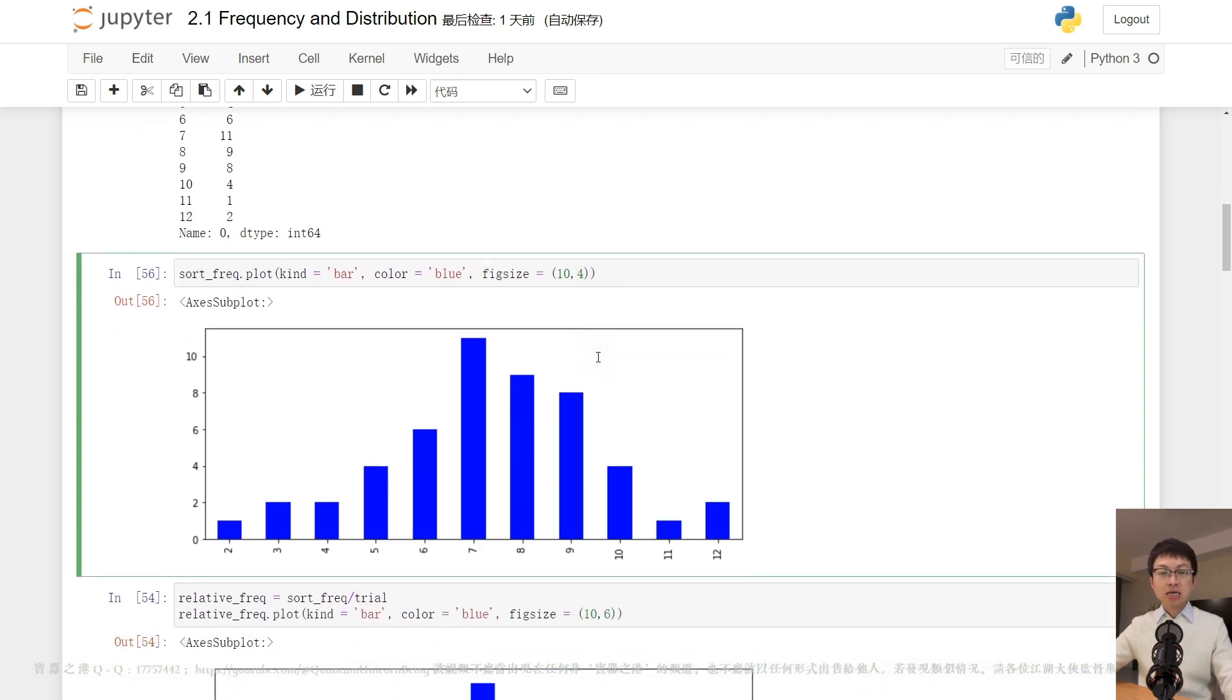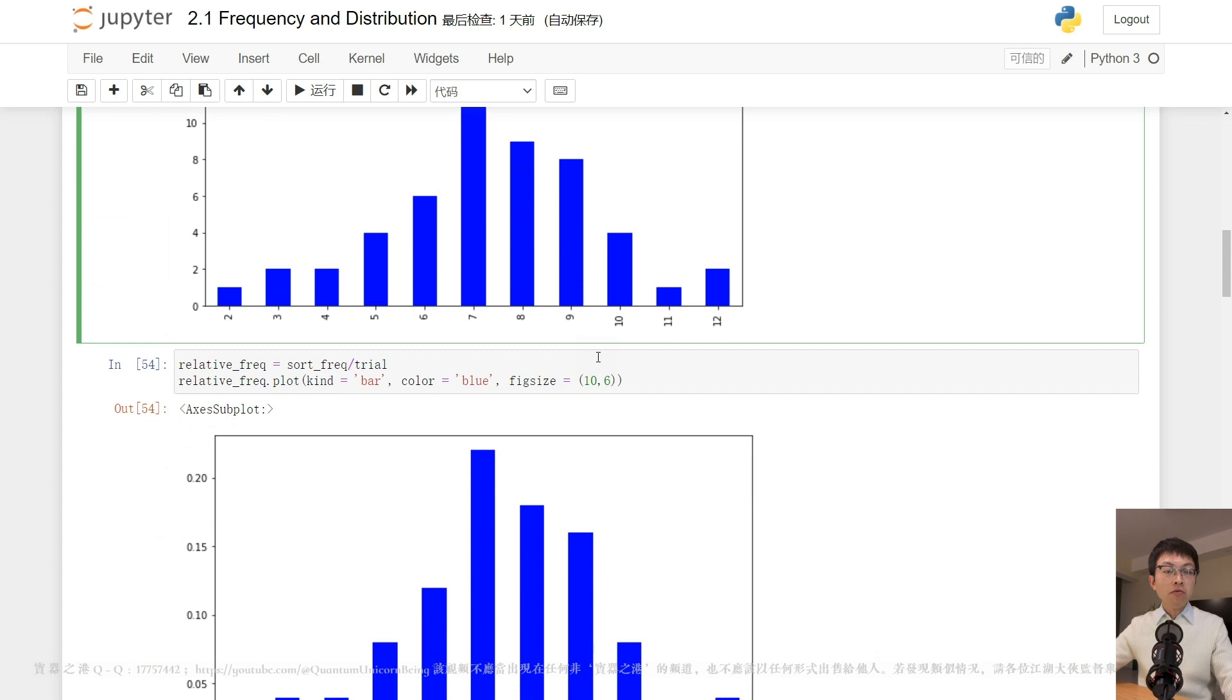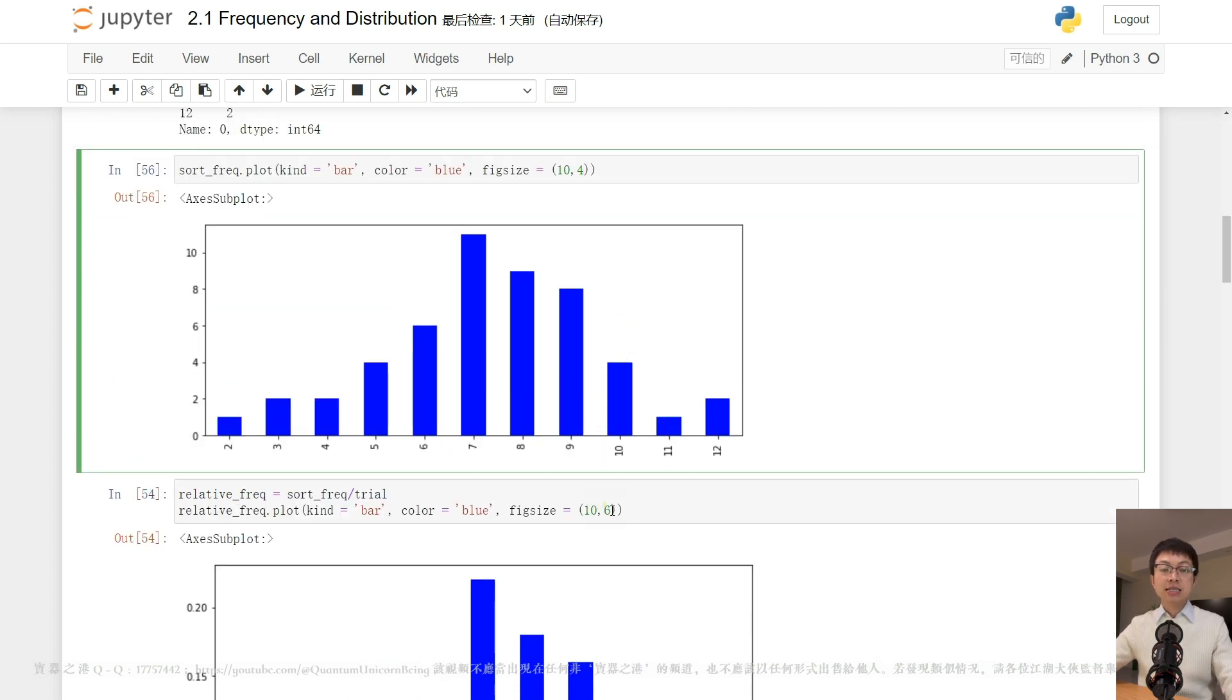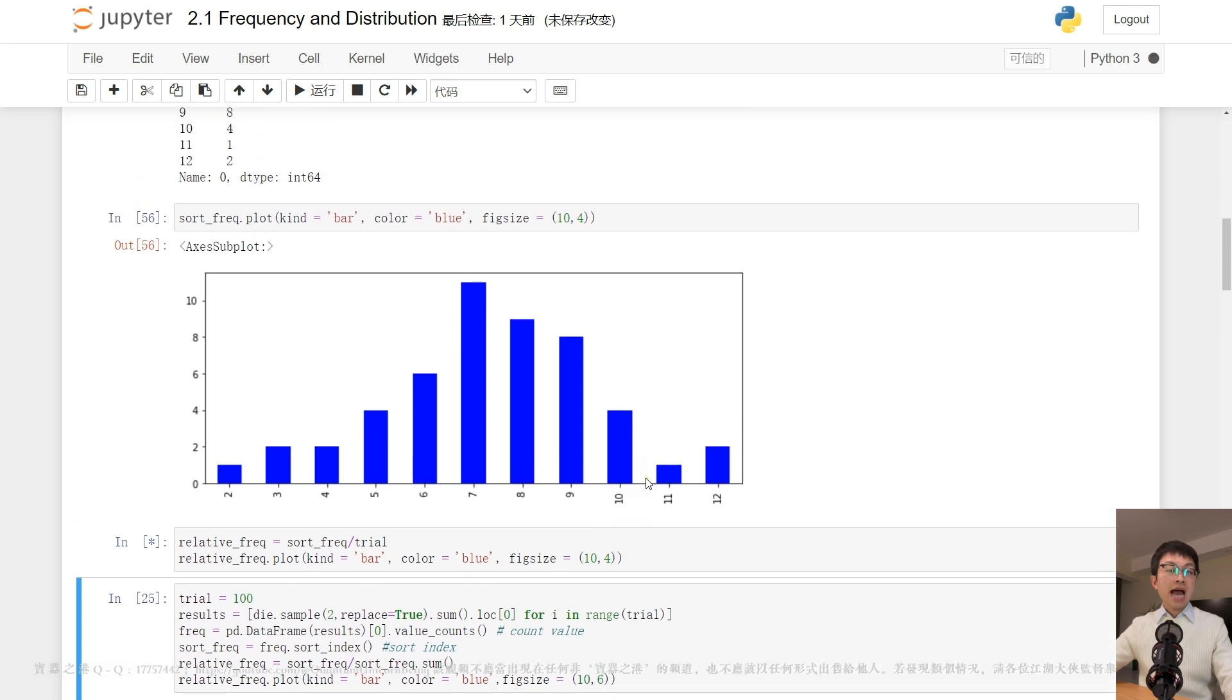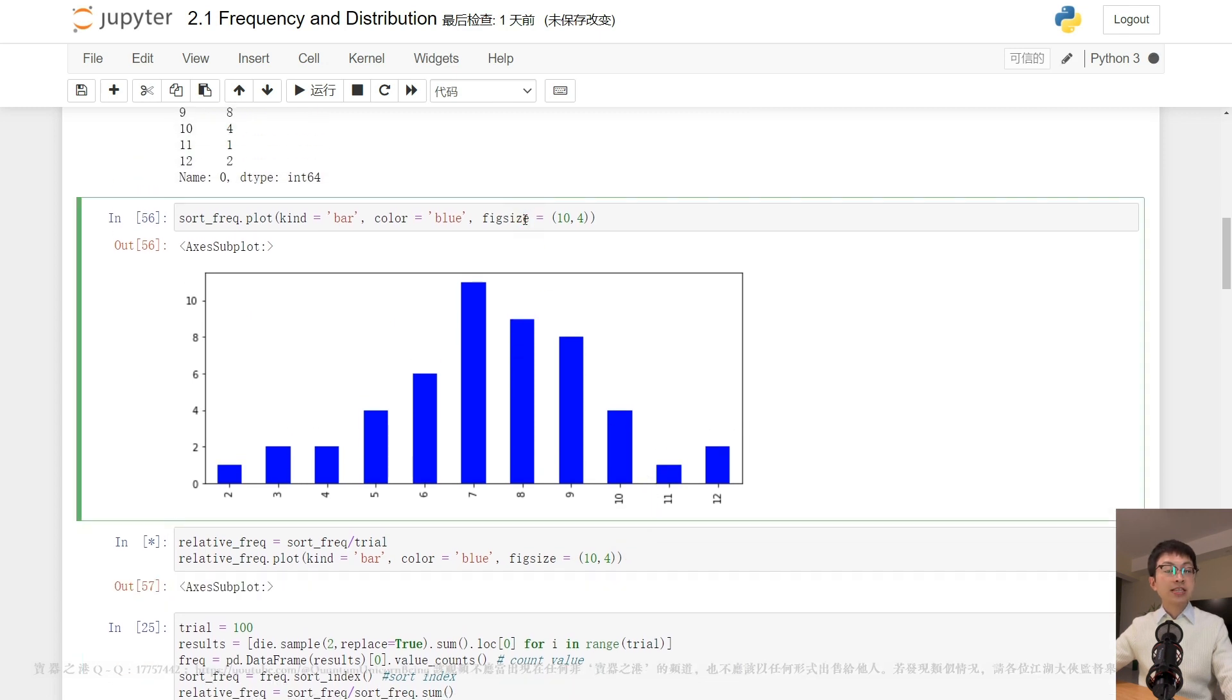Basically, relative frequency is how often something happens divided by all outcomes. Here, we have tossed the dice 50 times.